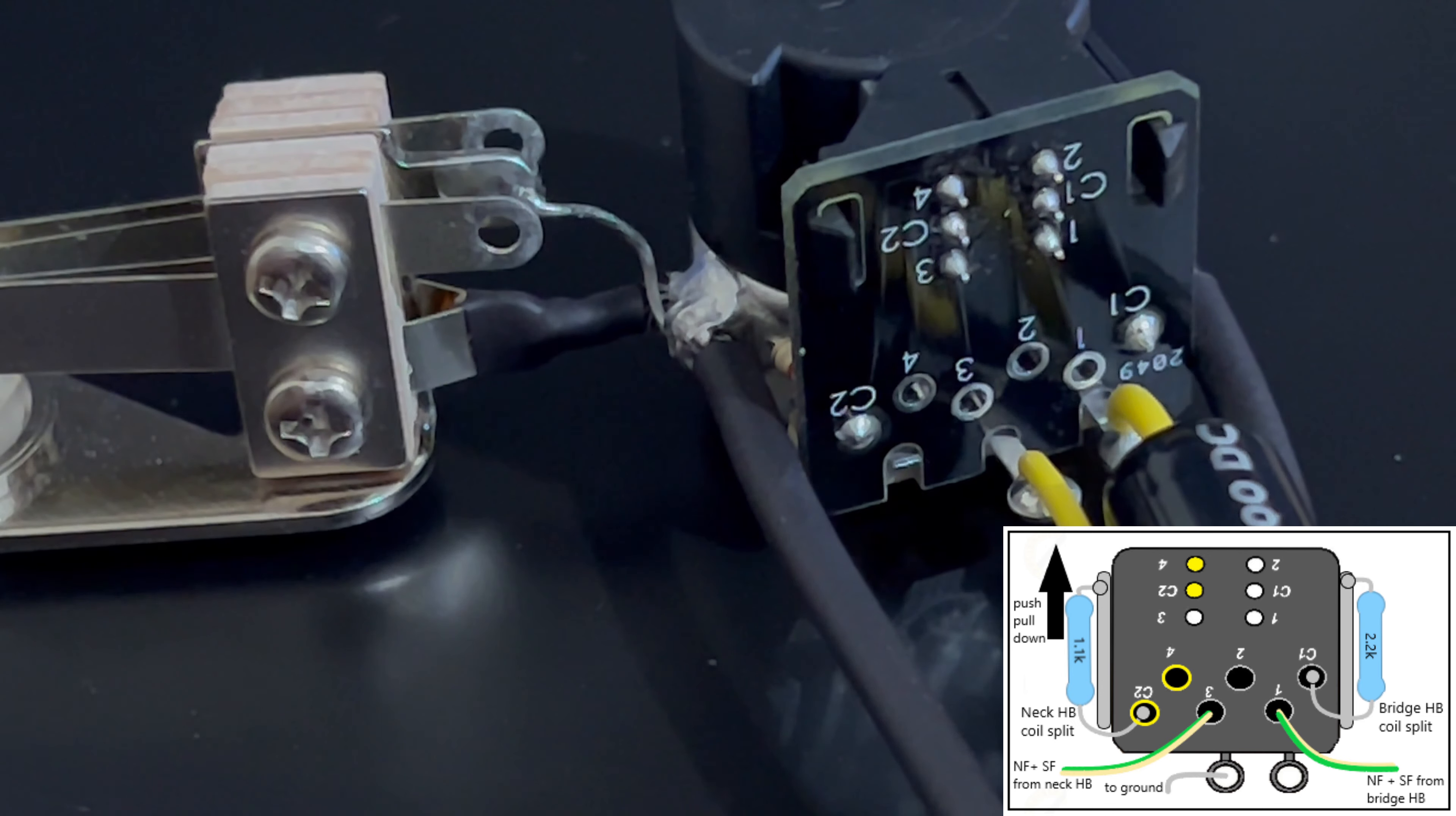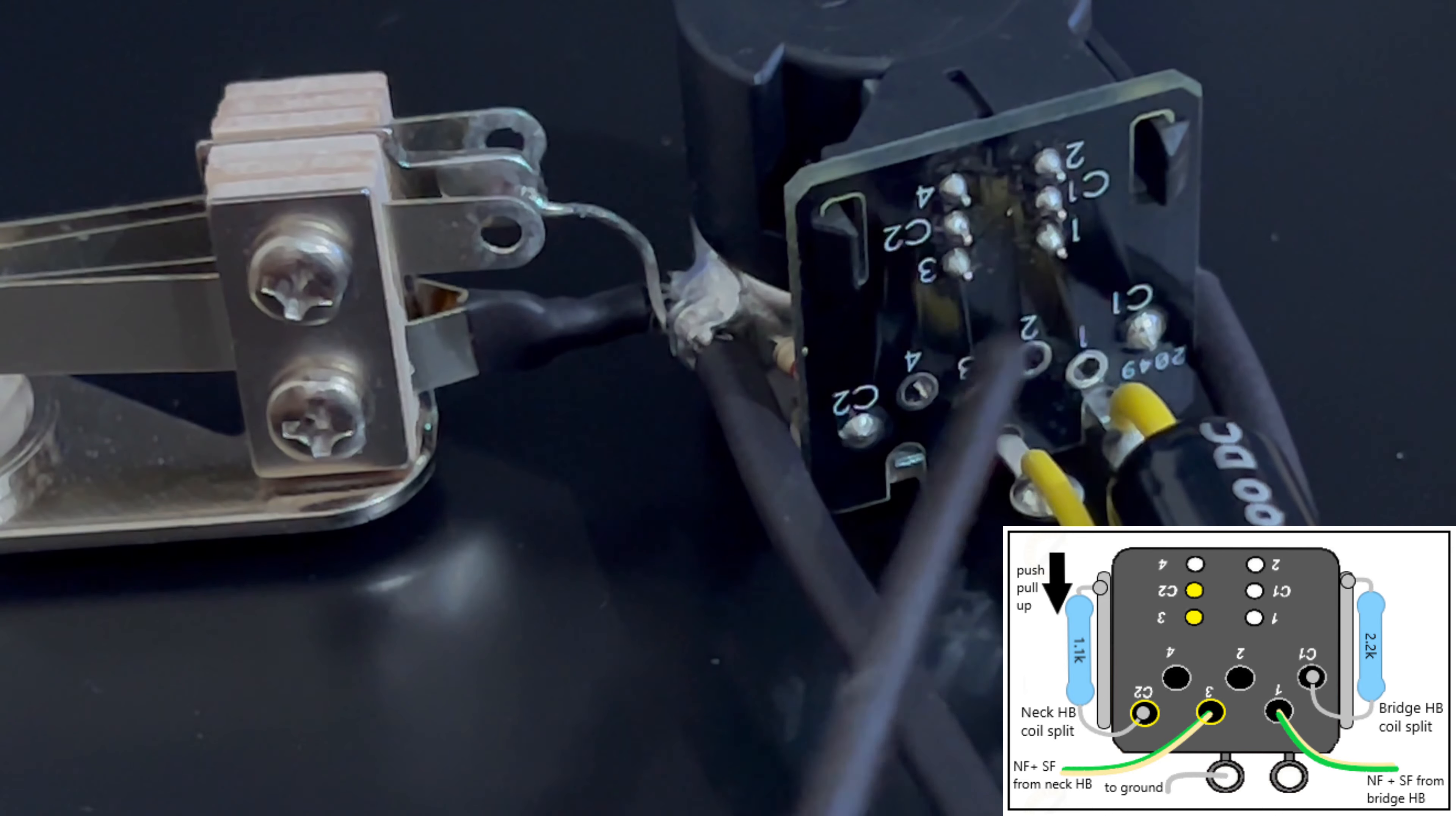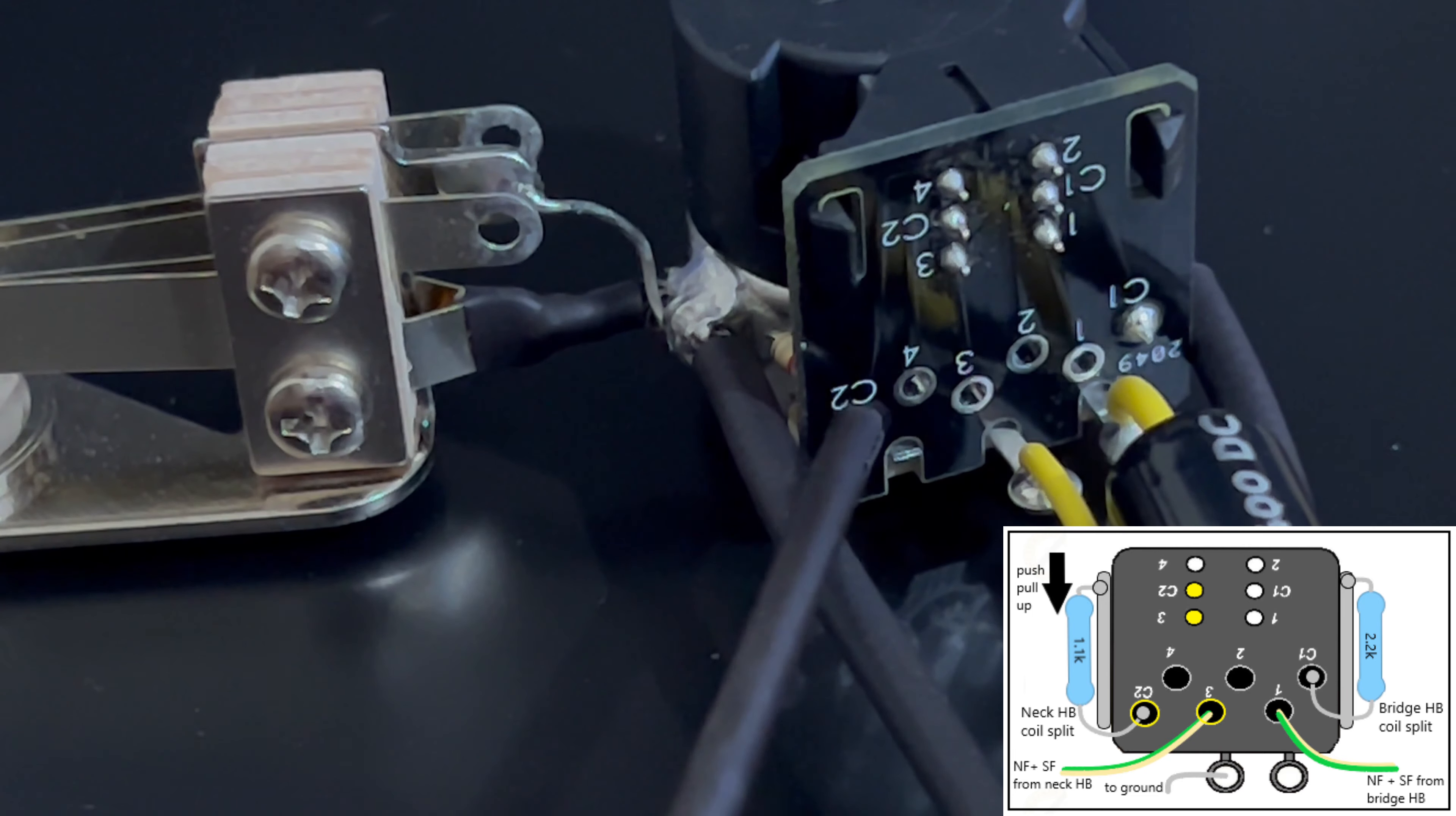But when we engage the push-pull and it's in the up position, C2 and C1, which are the common lugs, are then connected to holes 3 and 1 just below it. So when it's in the up position 3, which is where we have our north finish and south finish of the neck pickup, for example, is connected to C2, which is our resistor.